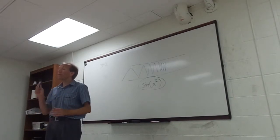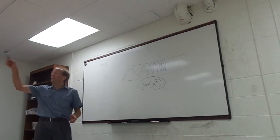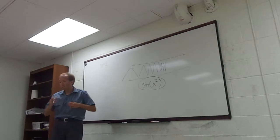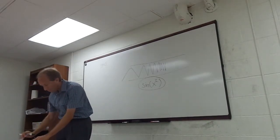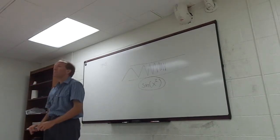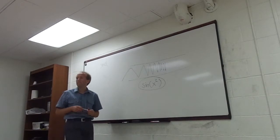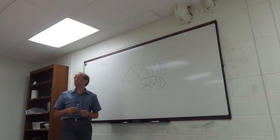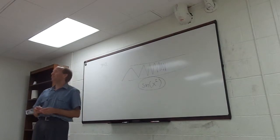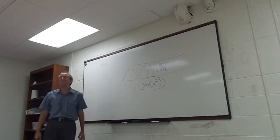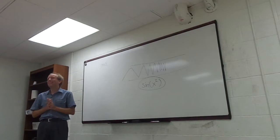A couple of these problems are kind of tricky. On 7A, you want to break that down into sine over cosine and solve it that way. So we can't just use that we know what the derivative of tangent is? No — just break it down into sine and cosine.